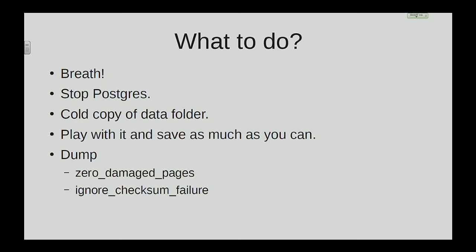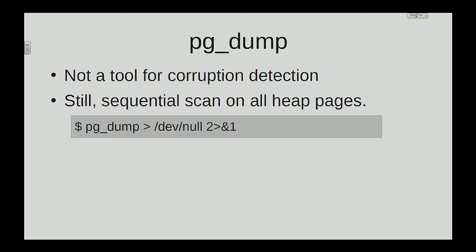What can you do to try to detect corruption? You have pg_dump — who thinks pg_dump is a corruption detection tool? It's not. It's in the name: it dumps data. It does some sequential scanning, and perhaps you'll find some heap pages corrupted on the way, but please don't use it for that. We have other tools.